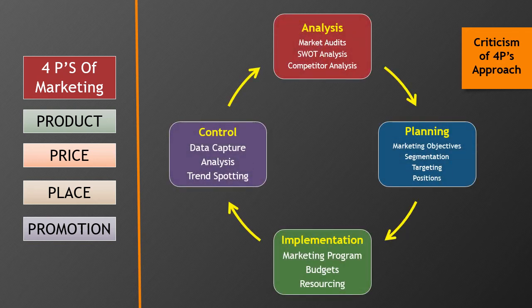Managing the marketing process requires the four marketing management functions: analysis, planning, implementation, and control. The company first develops many company-wide strategies and then transfers them into the marketing and other plans for each division, product, or brand. Through implementation, the company turns the plans into actions. Control consists of measuring and evaluating the results of the marketing activities and taking corrective actions where needed. Finally, market analysis provides the information and evaluation needed for all the other marketing activities. This is a circular design because it never ends — the marketplace is always changing.